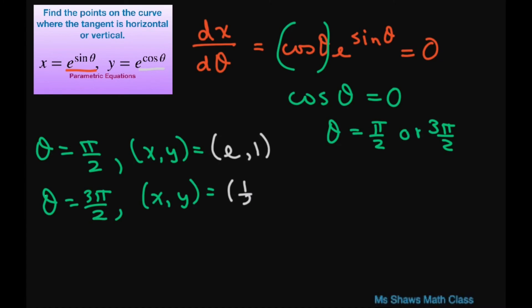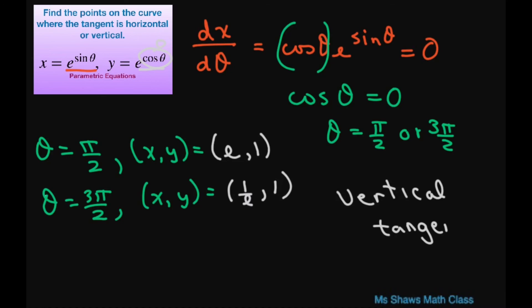So the x value is 1 divided by e and y equals 1. And these are going to be your vertical tangents. That's it — thank you, have a nice day, bye!